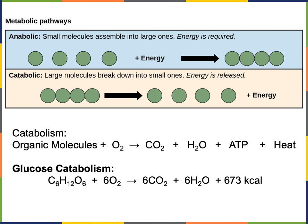Metabolic pathways can be classified as either anabolic or catabolic. An anabolic pathway is where small molecules assemble into large ones, and energy is required to fuel an anabolic pathway. An example of an anabolic pathway is DNA replication. Another example would be transcription or translation.